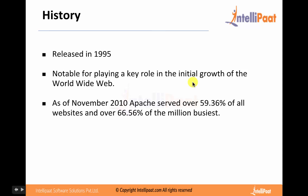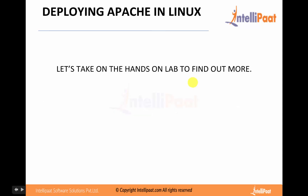Nowadays there is another web server called NGINX which is catching up, but not so fast because Apache is still the most robust and most used web server, and the most reliable one. Now let's do a hands-on and check out how we can install Apache web server on Linux. We will also write an HTML page and publish a simple website.